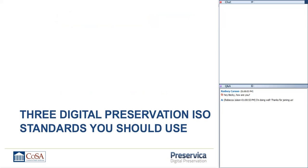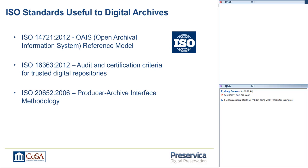Thank you, Michael. It's delightful to be with all of you. I'm going to run through three ISO standards that are particularly useful for folks in the digital preservation arena, and then Charles is going to follow up with some updates and tips related to the digital preservation capability maturity model. The three standards are: 14721, the Open Archival Information System reference model; 16363, the audit and certification criteria for trusted digital repositories; and 20652, the producer-archive interface methodology. I want to give you a highlight overview of why these standards are useful for the archives community.